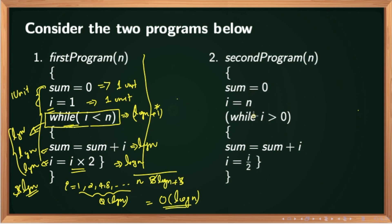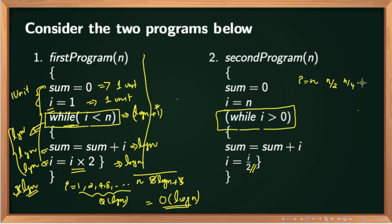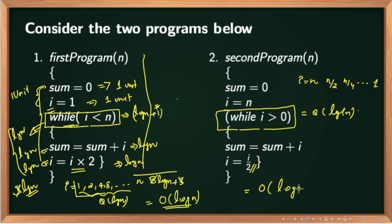Now consider the second program. If we look for the most executed line, that will be the while loop. We have to find out how many times this particular while loop is getting executed. We start with i = n. After every step, the value of i is getting decremented as i / 2. So the next step i value becomes n/2, then n/4, up to 1. This is a geometric progression, and this is the same series as before but in reverse order. So the number of steps will be theta of log n, and the running time of this program is O(log n).